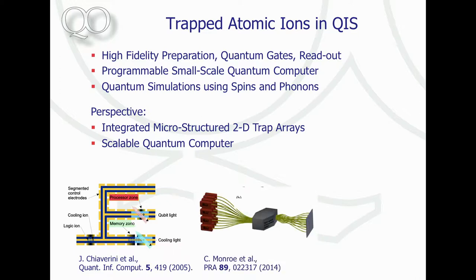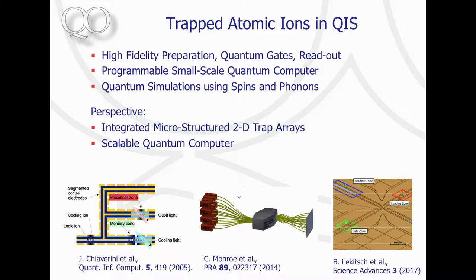There are other proposals: a recent one where you have small sub-processors and interconnect them via photonic links — that's an approach being pursued in Maryland. And there's a recent proposal that completely relies only on microwave-driven ions, with no lasers needed for any coherent operation, implemented on a larger trap chip using segmented electrodes and shuttling of ions.